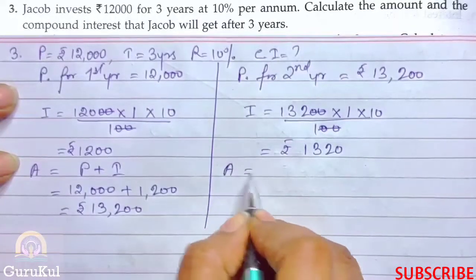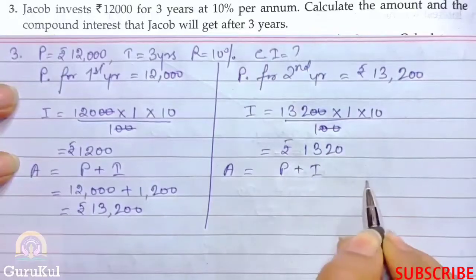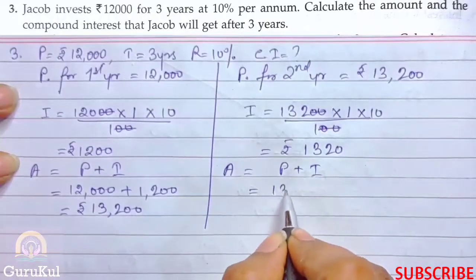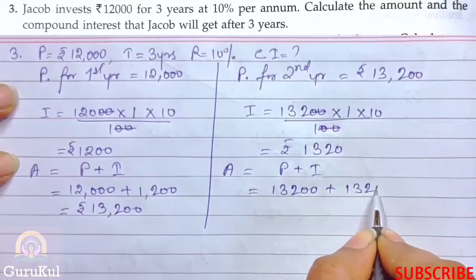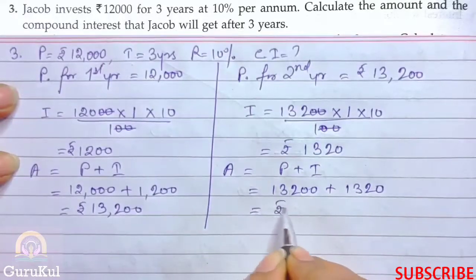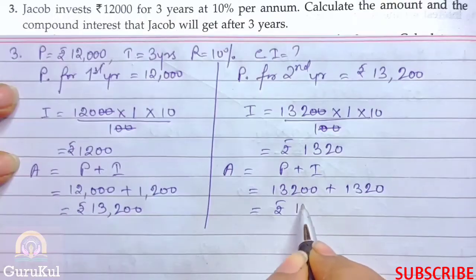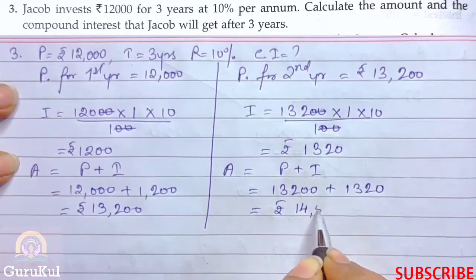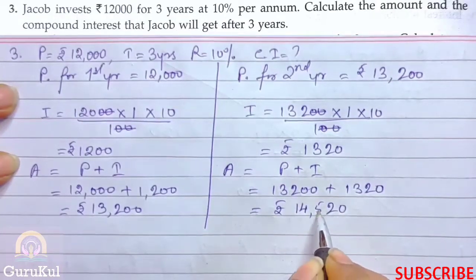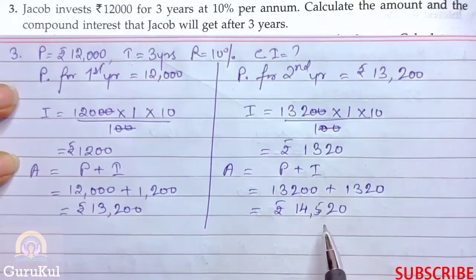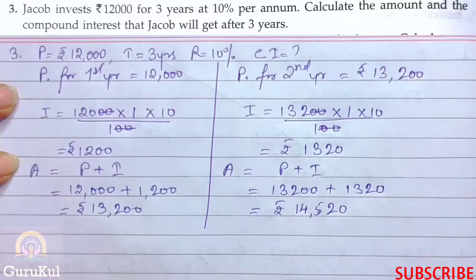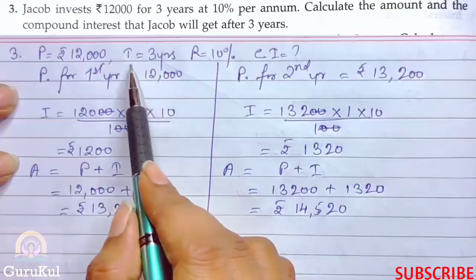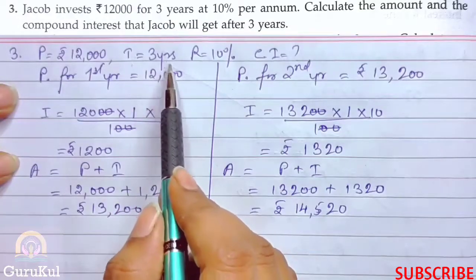Now amount is principle plus interest, so 13,200 plus 1320 gives us the amount of ₹14,520. This is the end of second year. Now this amount becomes the principal for the third year. Why third year? Because the time given was 3 years.